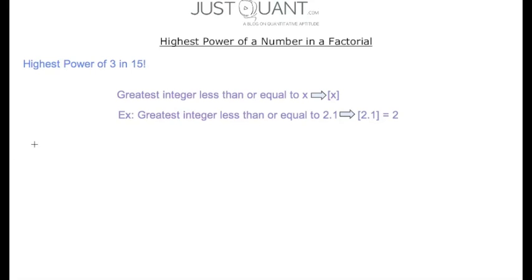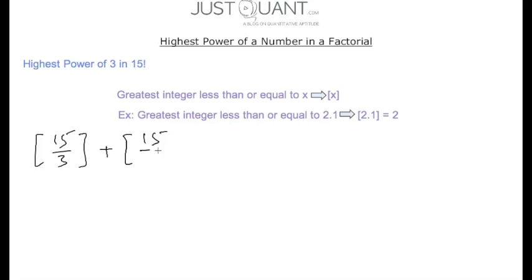Now, the highest power of 3 in 15 factorial is obtained by calculating the greatest integer less than or equal to 15/3, plus the greatest integer less than or equal to 15/3², plus the greatest integer less than or equal to 15/3³, and so on.